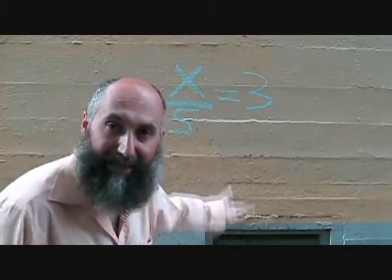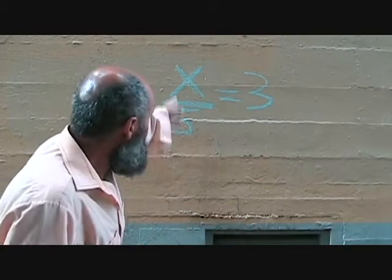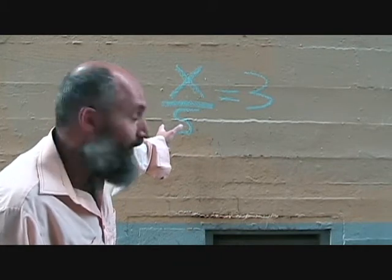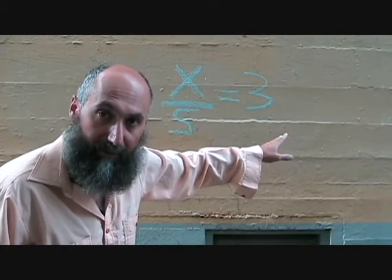What we want to do is get x by itself. This is division, this is x divided by 5, so we've got to multiply this side of the equation by 5, that means we have to multiply the other side of the equation by 5.